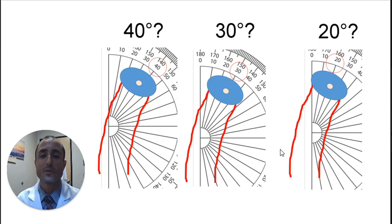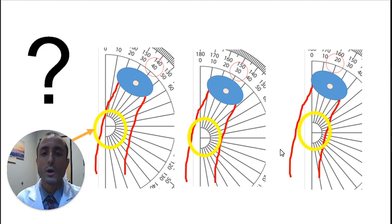The curvature of an arc would be very difficult to estimate using a goniometer or a protractor. For example, would this angle be 20, 30, or 40? Where do you position the hinge of the goniometer or the protractor in relation to the penis to get an accurate measurement of the curvature of an arc?